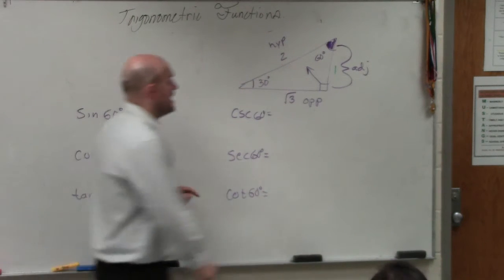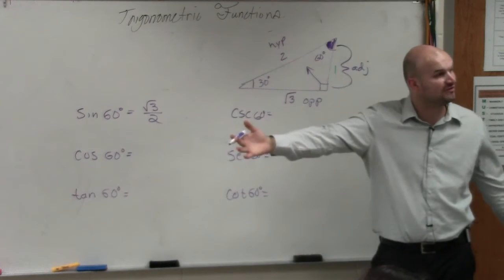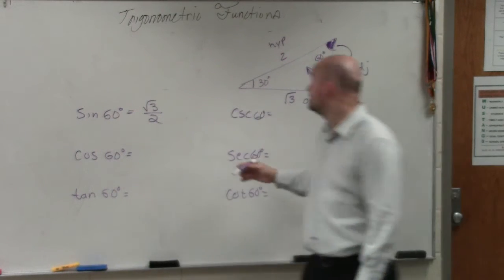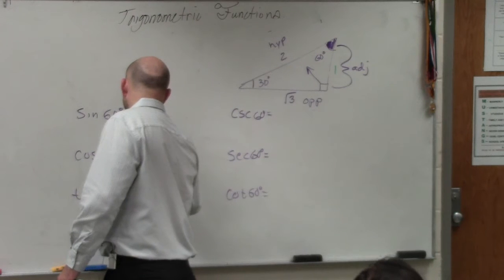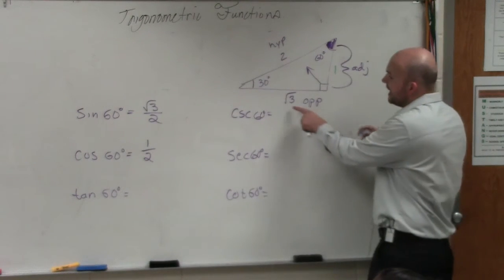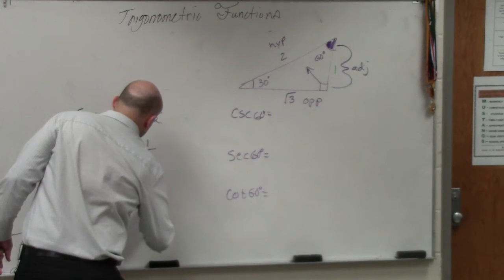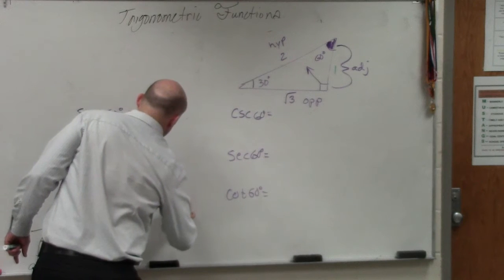For cosine of 60, that is adjacent over hypotenuse. Again, this was provided to you guys in your focus lesson in the last class period. So that is going to be 1 over 2. The tangent is opposite over adjacent. Square root of 3 over 1, which is just the square root of 3.